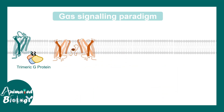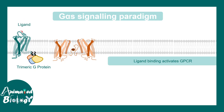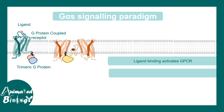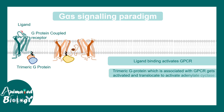GαS signaling starts with the membrane-bound GPCR, which is a seven-transmembrane domain receptor. It is always bound to the trimeric G protein. When a ligand binds, it activates the G protein coupled receptor, and that leads to a small conformational change that helps the trimeric G protein to get activated. Generally, the alpha subunit of the trimeric G protein is bound to GDP.